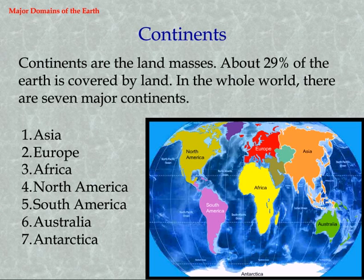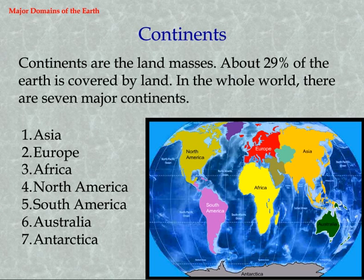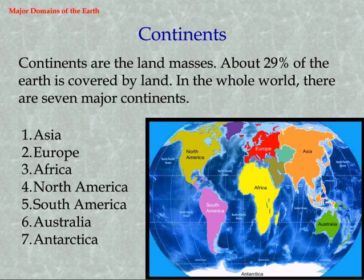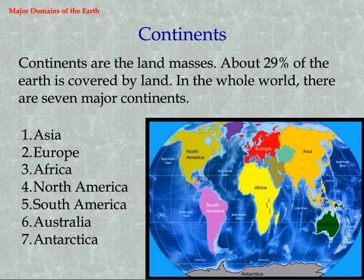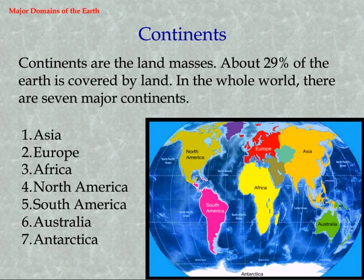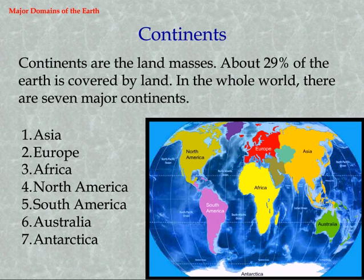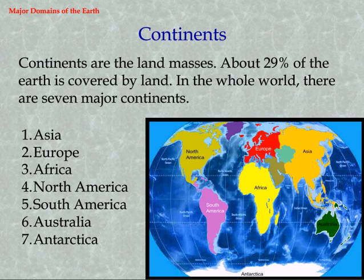Continents are the land masses. About 29% of the Earth is covered by land. In the whole world, there are seven major continents.